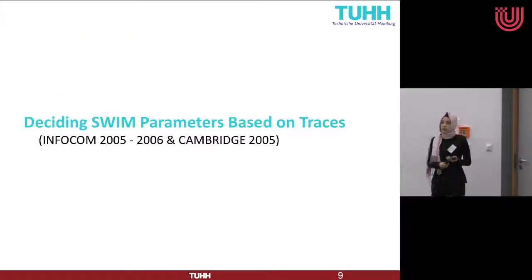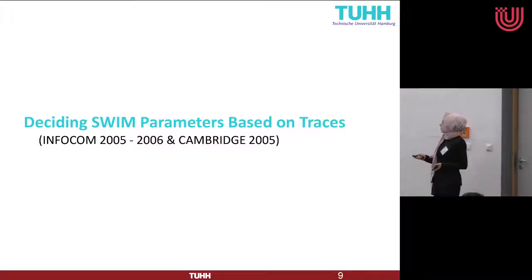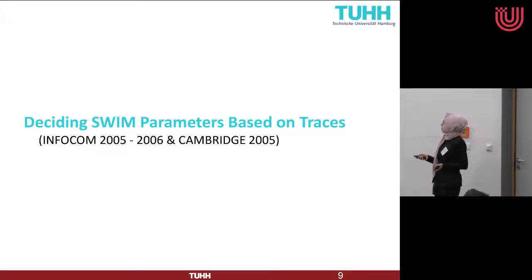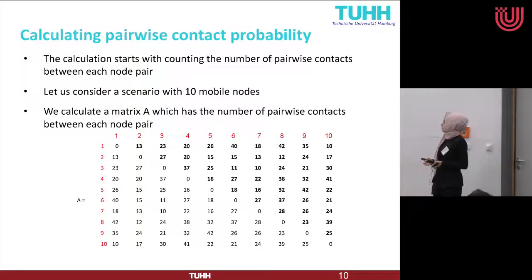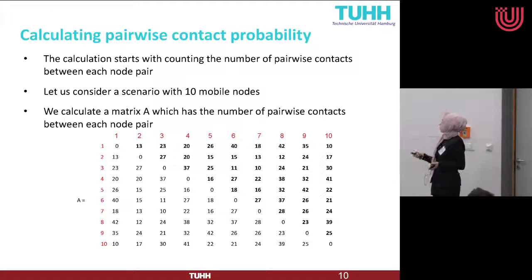In this work we use three different real-life traces that are commonly used in the literature: Infocom 2005, Infocom 2006, and Cambridge 2005. Due to time constraints we will only show results from one of these traces. From the contact traces, we can extract the number of contacts each node has with another particular node. The traces consist of a large number of nodes, around 90 to 100, but here I show a small part with only 10 nodes.